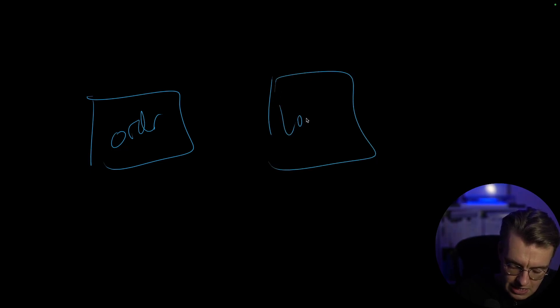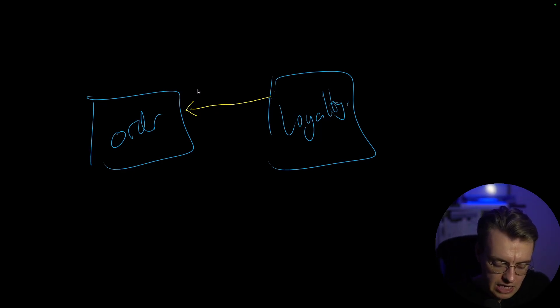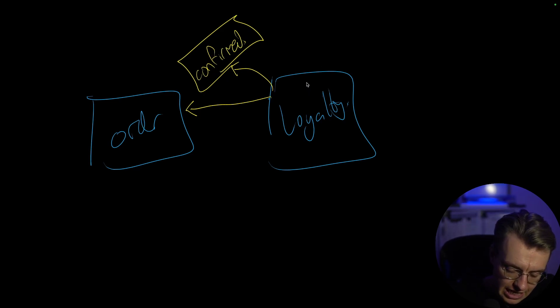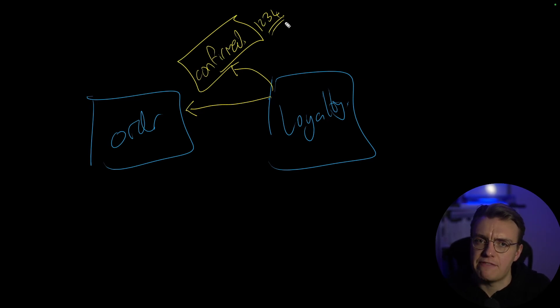So if you come back to the same example again, you've got your order processing service and you've got your loyalty point service. And as opposed to your order processing service needing to tell the loyalty point service to add the loyalty points, instead, the loyalty point service is just listening for events that the order processing service is publishing. So the order processing service will say, yep, this order has been confirmed. And the loyalty point service will say, thank you very much. I've received the fact that this order has been confirmed. Let's add some loyalty points to customer 1234, because that's who that event is for.